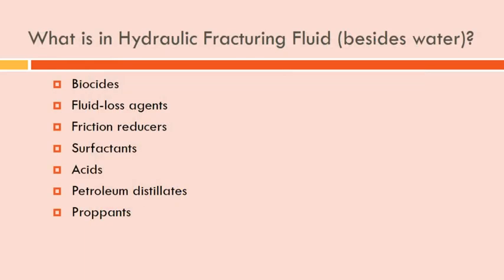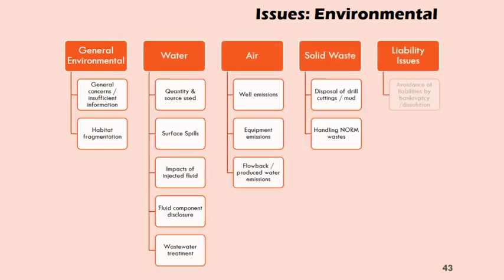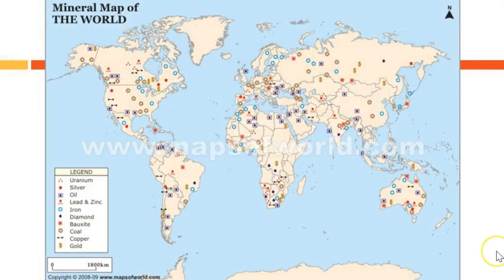This slide lists the chemicals actually in fracking fluid — much of it is also in regular drilling fluid, for reference. Looking at general environmental issues associated with oil and gas, there's a concept flow chart covering all of this. We've been talking about mining, coal, oil, and natural gas — and there's also a fun distribution map of minerals around the world. That's it for this video — a longer one at about 30 minutes. If you have questions, post them on the video notes board or ask in class. See you next time.